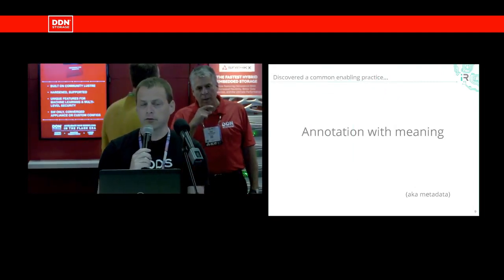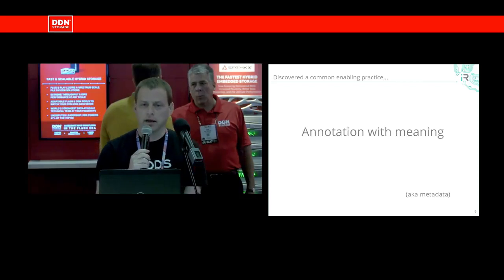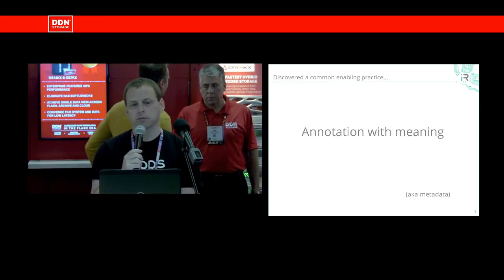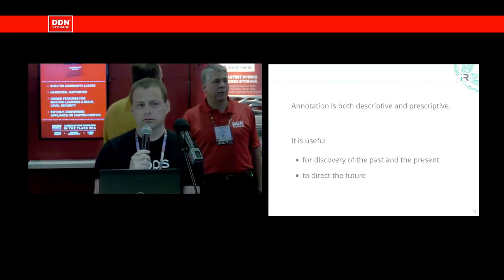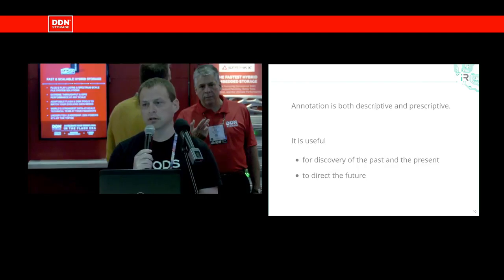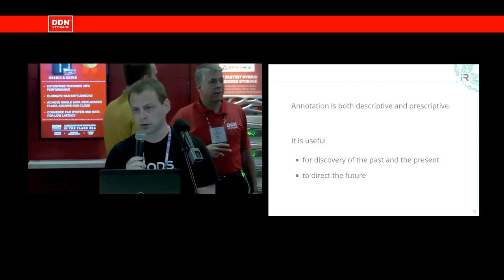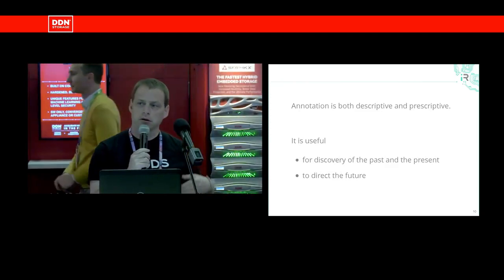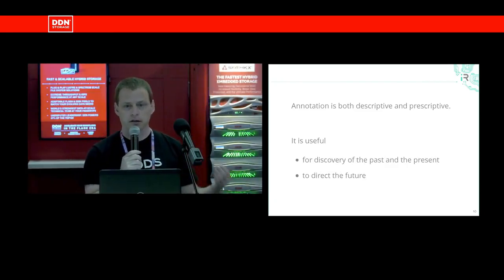The main takeaway after all this work is that the common enabling practice turns out to be annotation that means something — AKA metadata. These are simple strings that you attach to something. They don't mean anything by themselves; the meaning comes because you have policy that cares about that particular string. This annotation can be both descriptive and prescriptive. You can tell a story about what has happened to the data, what state your system is in, and what things mean. But you can also encode your intent for what you want to happen to your data in the future — annotate something to say it should be over there next week, and policy can come along, care about that annotation, and take action on it.